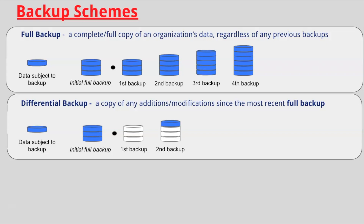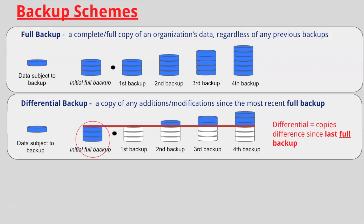The second backup has one piece that is subject to backup, representing an addition or modification since the last full backup. The third backup has two pieces of data subject to backup — they are additions or modifications since the most recent full backup. The fourth backup has three pieces of data subject to backup, again representing additions or modifications since the most recent full backup.